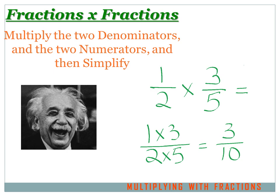1 over 2 times 3 over 5. Well, we can change that and multiply the two numerators — 1 times 3 — and put it over the two denominators — 2 times 5 — and then we just simplify that fraction. It's 1 times 3 equals 3, and 2 times 5 equals 10. So, 1 half times 3 fifths equals 3 tenths.